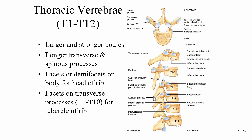We're also going to have facets or demi-facets on the body for the head of the rib. I call these costal facets because costal means rib. If it's an entire facet, we'd call it a costal facet. If it's partial, we would call it a costal demi-facet — a demi-facet is a partial facet. Two partials come together to create a whole, but we would still call that a demi-facet.